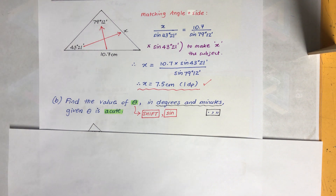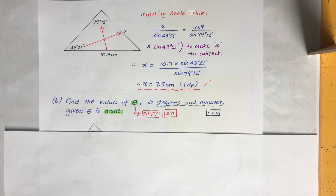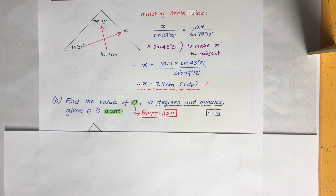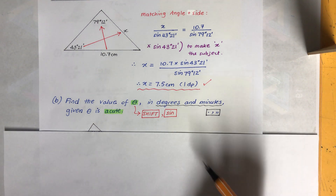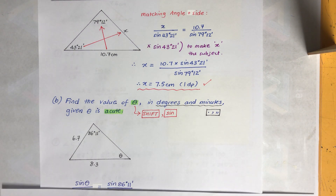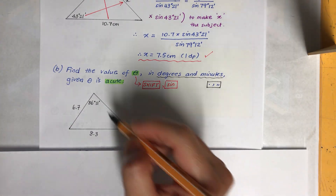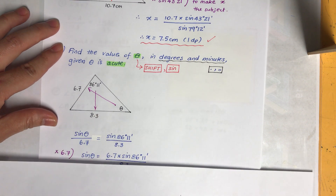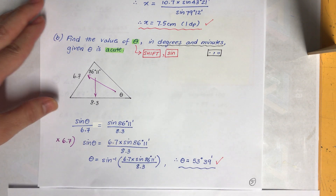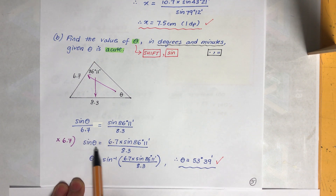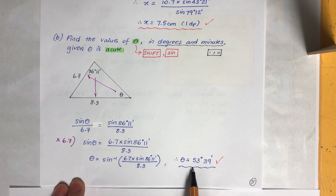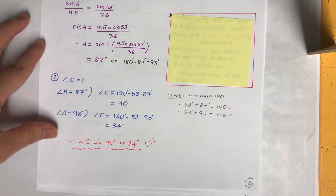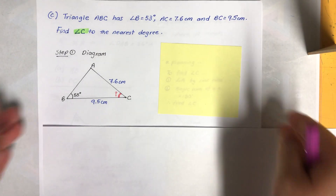Part b: find the value of θ. When finding an angle on the calculator, you must use shift + sin (inverse sine). Since we're in sine rule it's sine, but generally it could be cos or tan. The angle is acute and needs to be expressed in degrees and minutes, so use the DMS button. Match up the sides and angles, move the sine to the other side using inverse sine, then apply DMS.